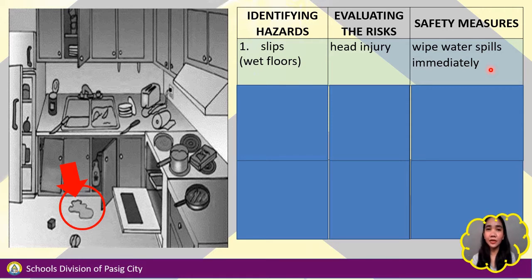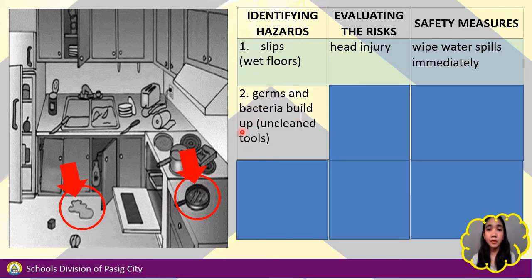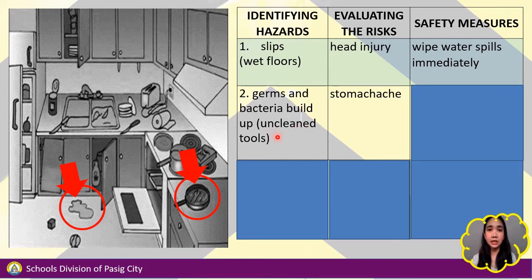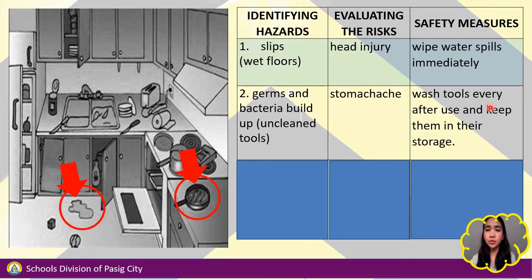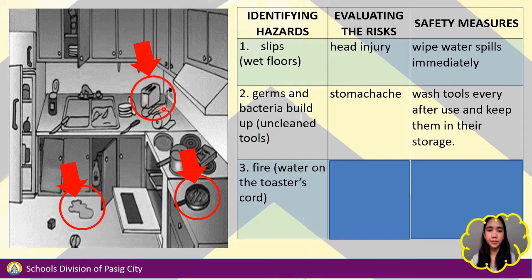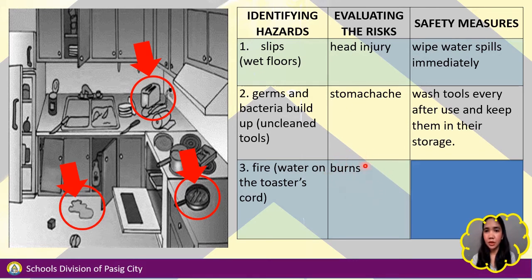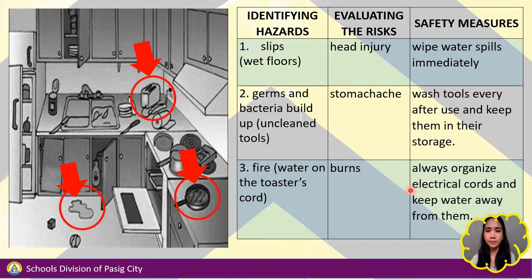Let's have another example. Second, germs and bacteria build up from unclean tools — it can cause stomach aches if we eat food from unclean tools. What we can do about it is to wash tools after every use and keep them in storage. Another example is fire, because there is water on the toaster's port and it is still plugged in. Evaluating the risk — it can cause burns. For the safety measure: always organize electrical cords and keep water away from them.